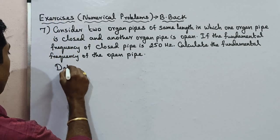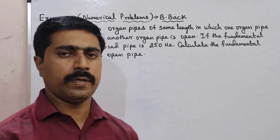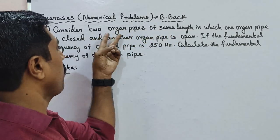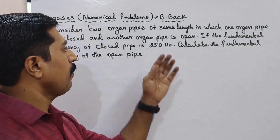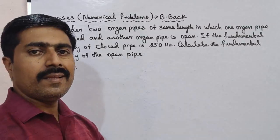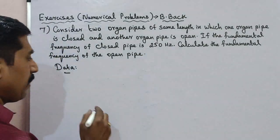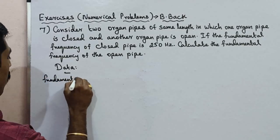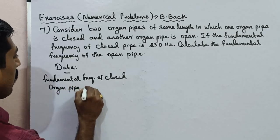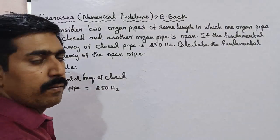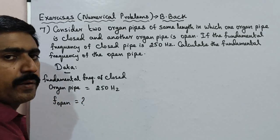First, we will read the data. There are two organ pipes — one organ pipe is a closed organ pipe and another is an open organ pipe. The two organ pipes are of the same length. The fundamental frequency of the closed organ pipe is equal to 250 Hz. Calculate the fundamental frequency of the open organ pipe — F open is equal to question mark.